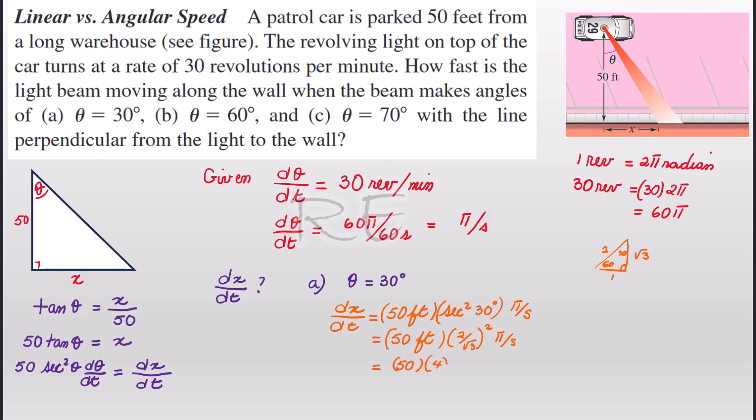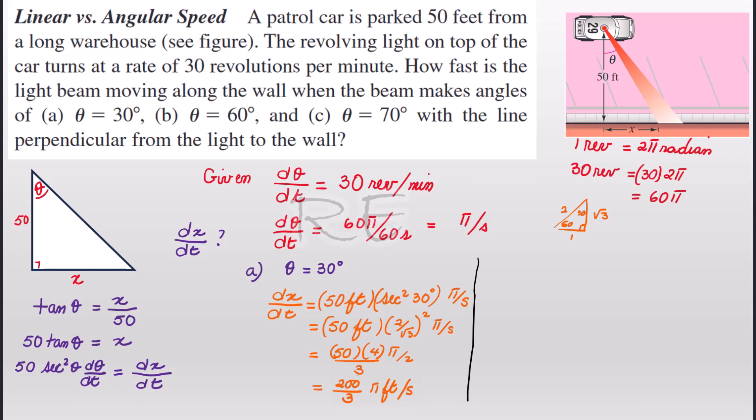Secant is one over cosine. Now just have to multiply 50 times 2 times 2 times 2 is 4 and √3 times √3 is 3. So the answer is 200/3 π feet per second.